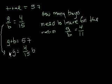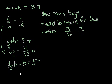And then we can just substitute that back into this equation. And then we get 4 over 15b plus b is equal to 57. And this is the same thing as 19 over 15b is equal to 57.